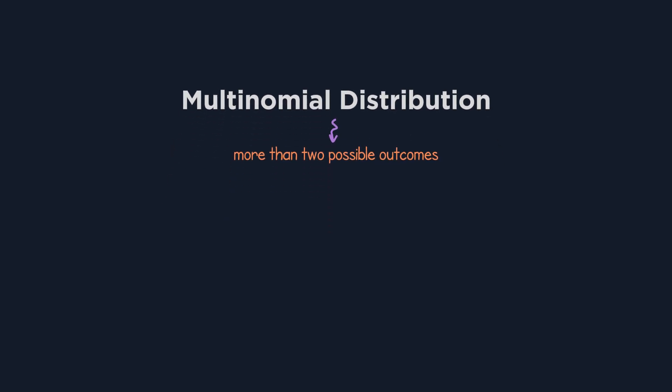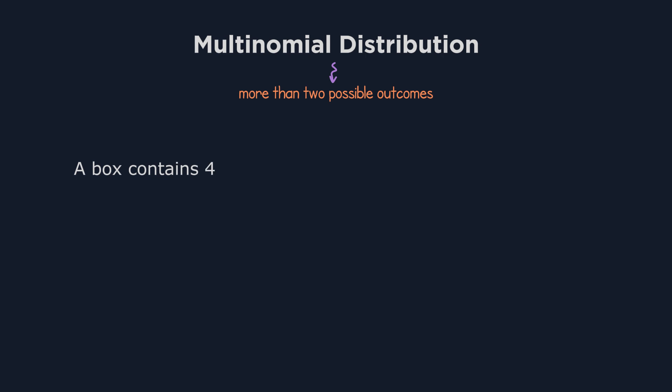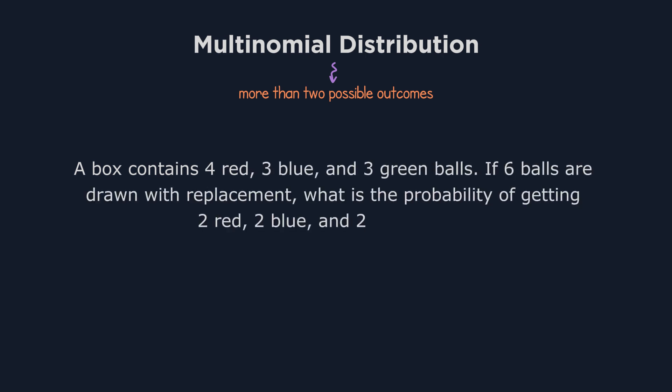To see this in action, let's explore a problem. A box contains four red, three blue, and three green balls. If six balls are drawn with replacement, what is the probability of getting two red, two blue, and two green balls?